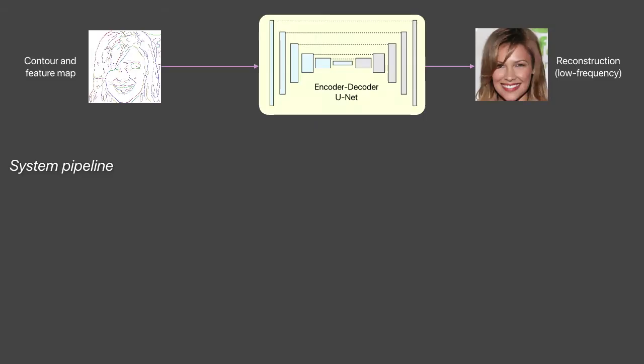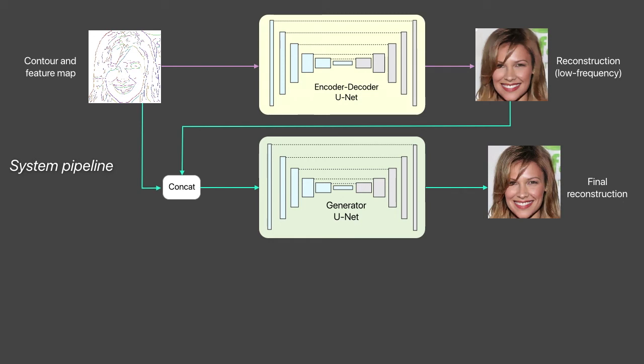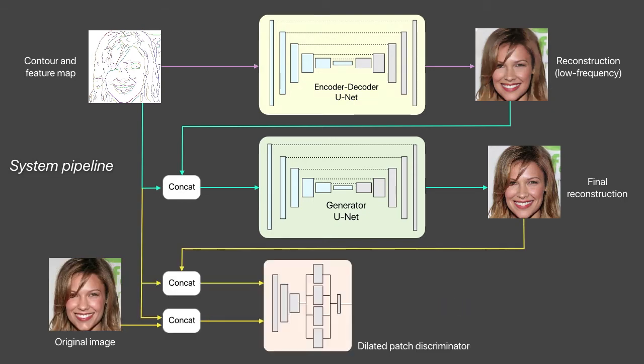This is the pipeline of our system. We first trained a network to reconstruct the overall color and structures from the input. We then reconstruct high-frequency information, such as texture and fine details, using a conditional generative adversarial network. A discriminator was trained to classify the synthesized images as fake and the ground truth as real, while the generator was trained to fool the discriminator.